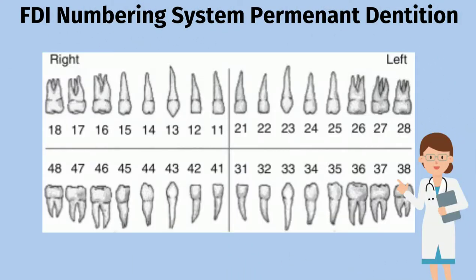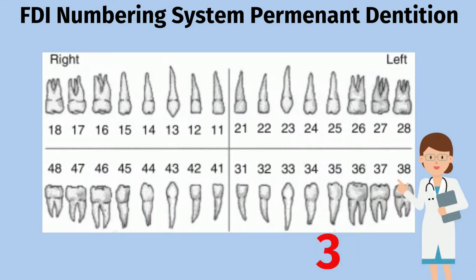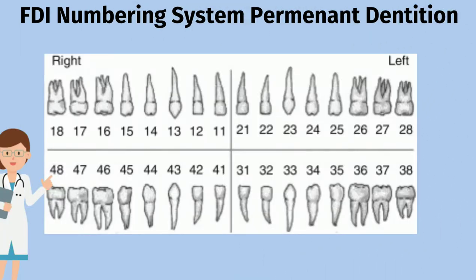For the lower left quadrant, we use number 3 as the first digit. For example, 3-1 is the lower left central incisor, and 3-8 is the lower left third molar. For the lower right quadrant, we use number 4 as the first digit. So 4-2 is the lower left lateral incisor, and 4-7 is the lower right second molar.